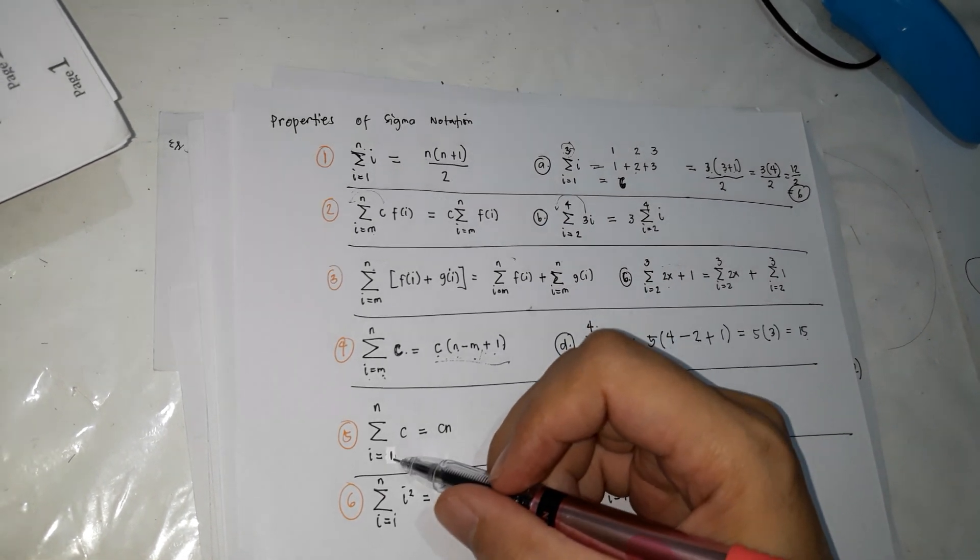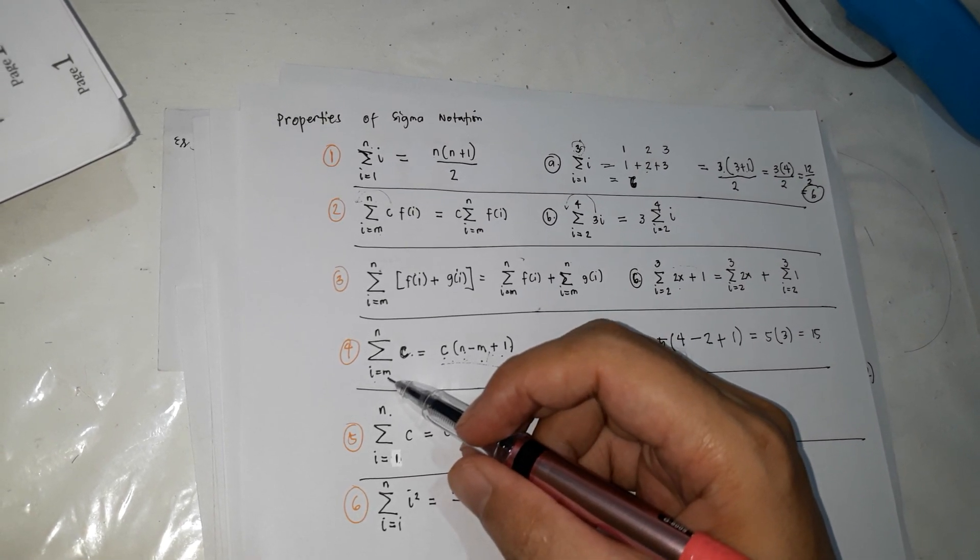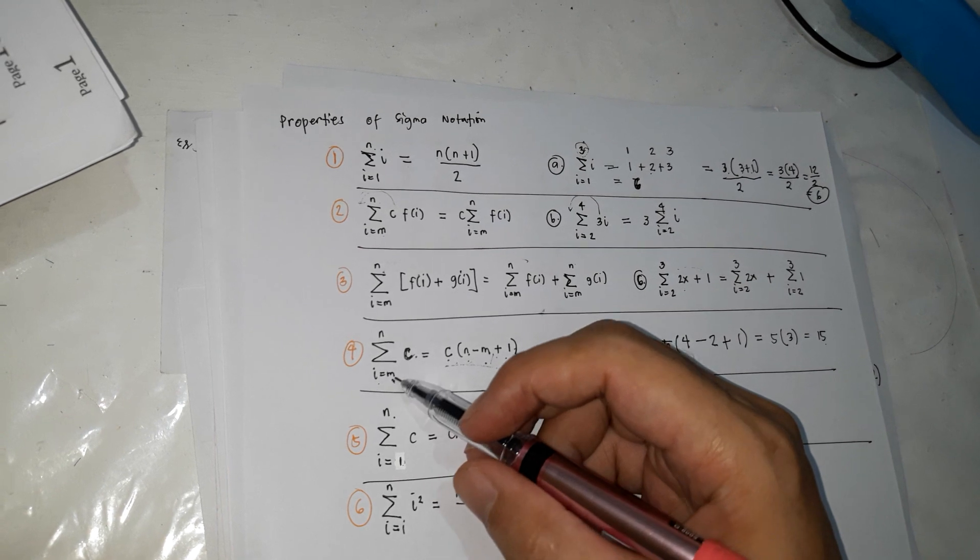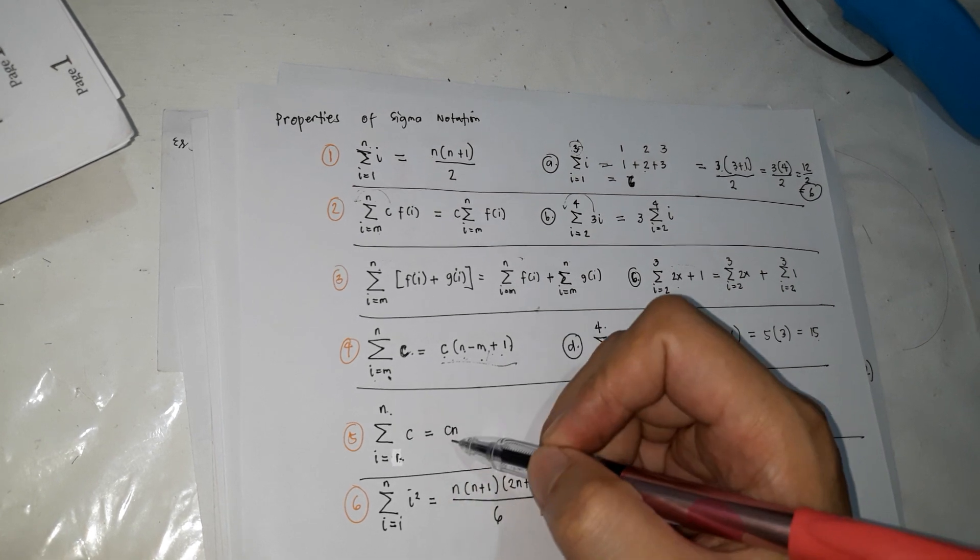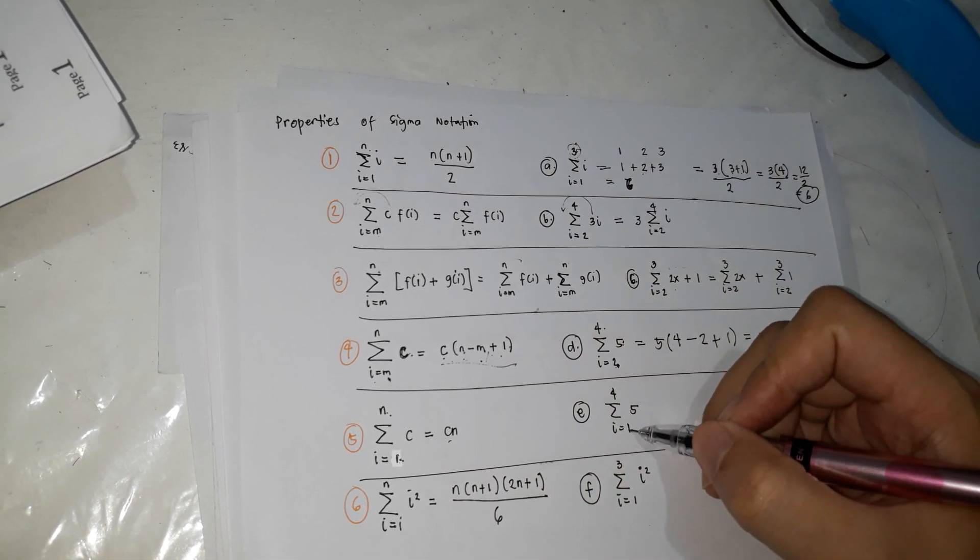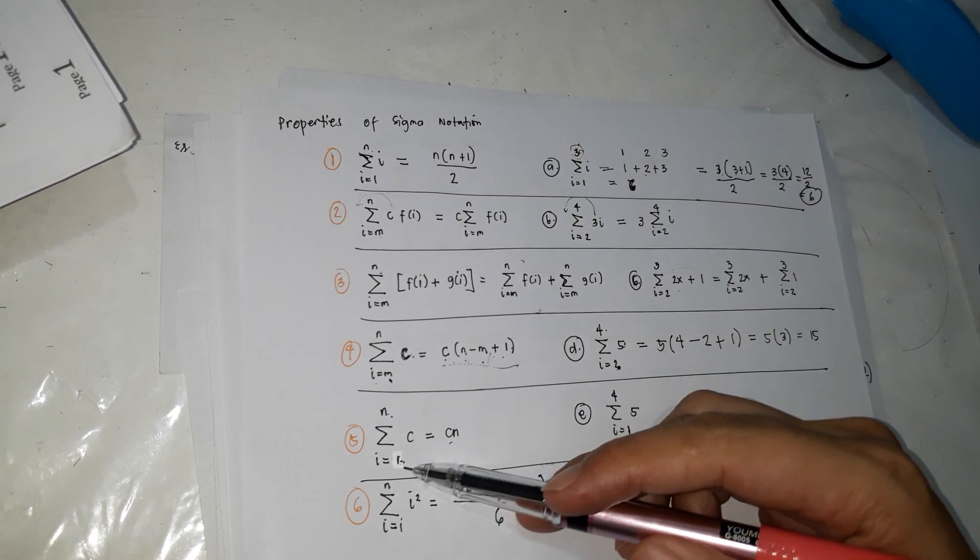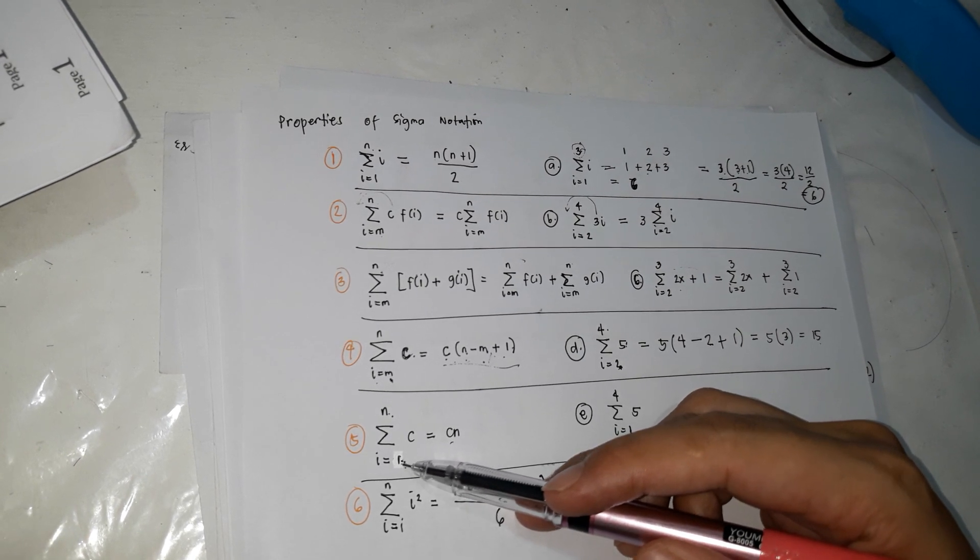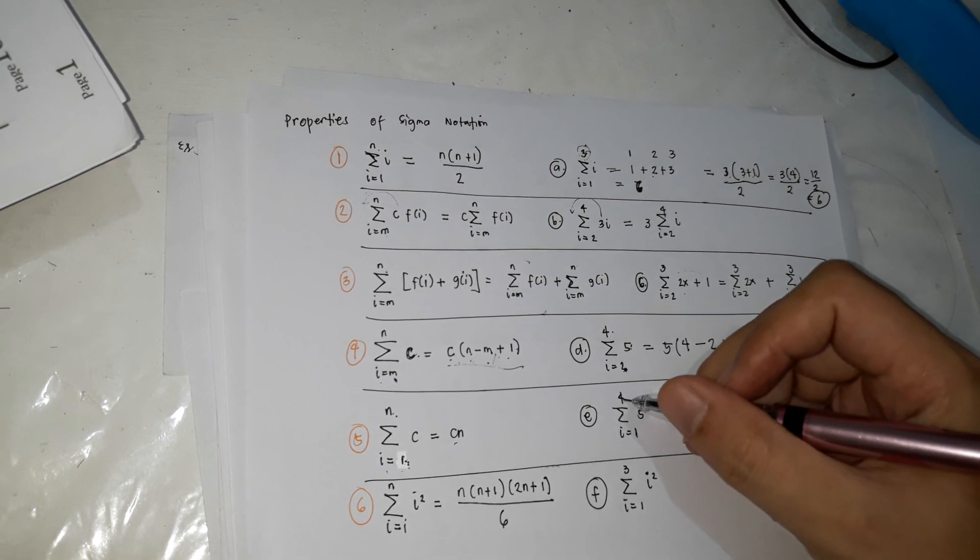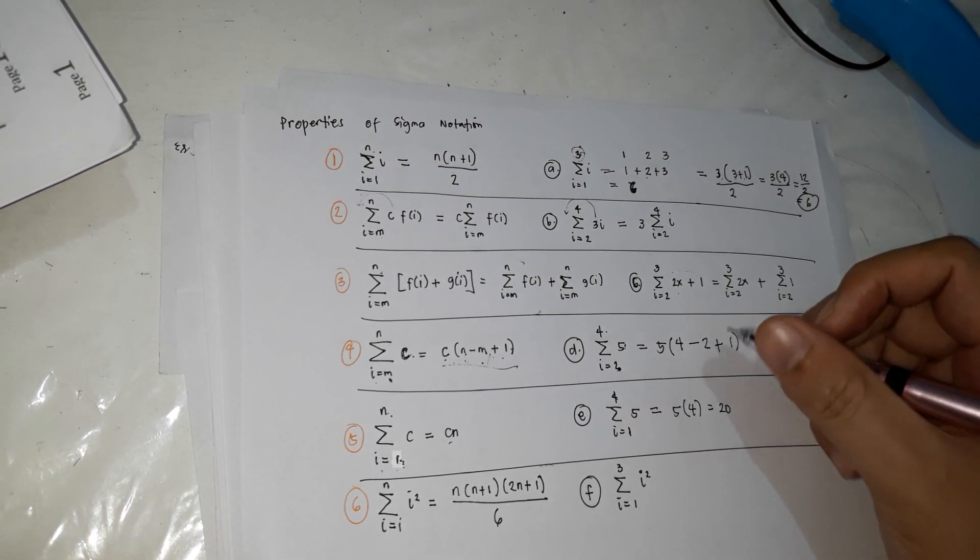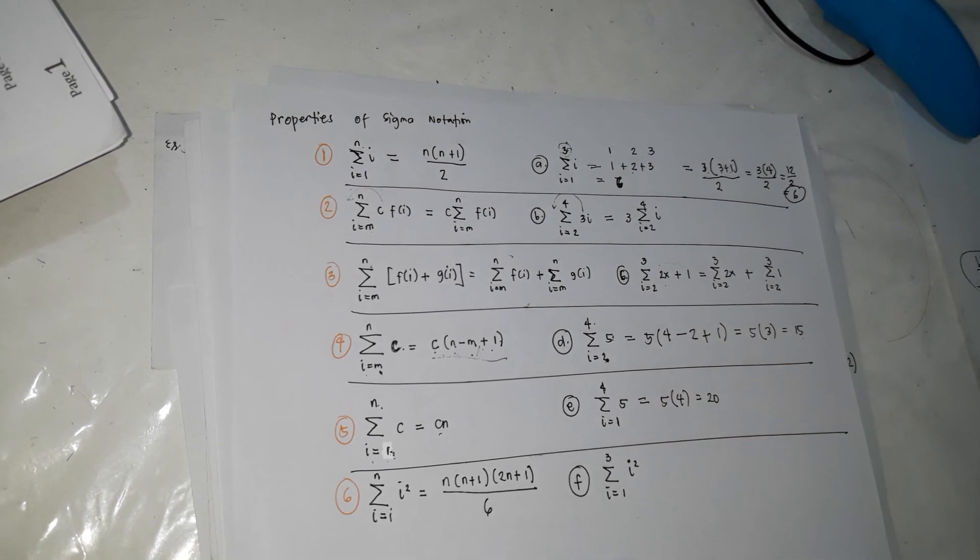Next, summation of C from 1 to N. Kapag ang difference dito, ang summation may start with any number. But dito, kapag nag-start ang summation from 1 until N, so ganito na lang ang formula. Dito ang kaibahan is nag-start sya ng 2, dito nag-start sya ng 1. So gagamitin mo lang ito kapag nag-start ang value ng I sa 1. So 5 times, what is N? 4. So the answer is 20.